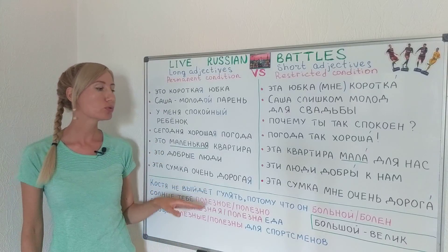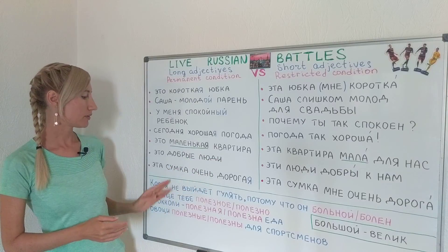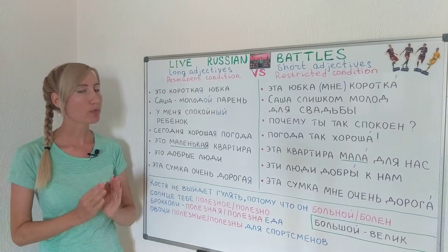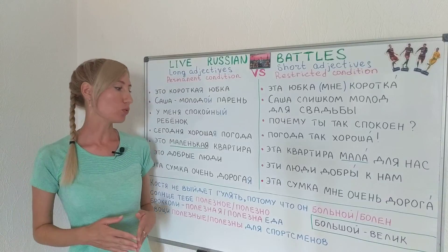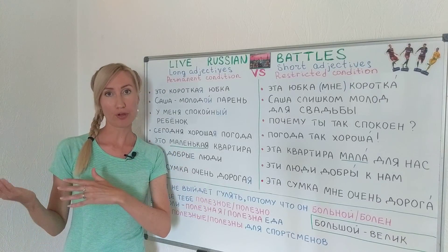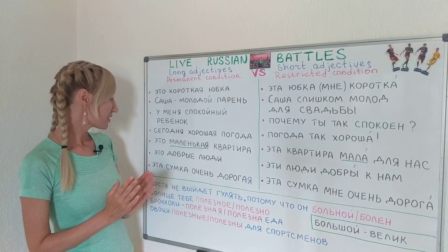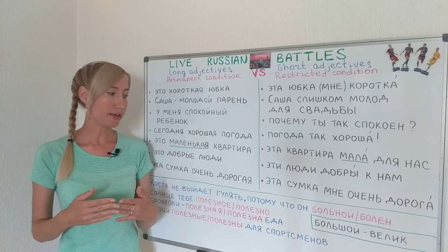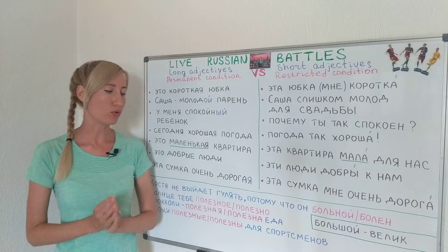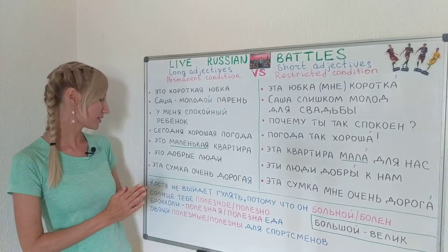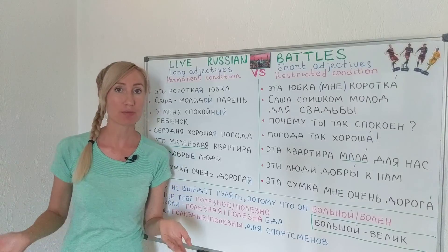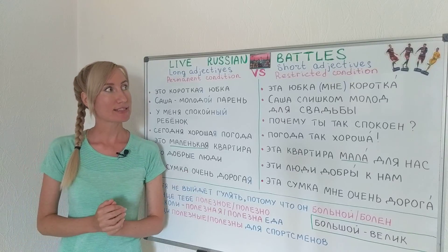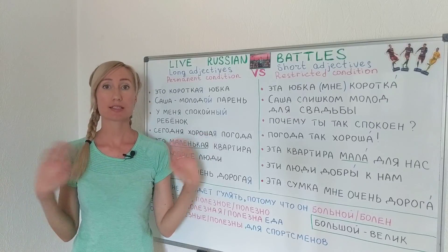There are four sentences — we don't know which forms are correct, so try to check yourself. Костя не выйдет гулять потому что он больной or болен. Солнце тебе полезное or полезно. Брокколи полезная еда — is that right? And the last one: овощи полезные для спортсменов. Try to do this exercise, and we'll meet again in Live Russian Battles — see you!